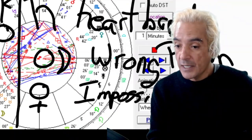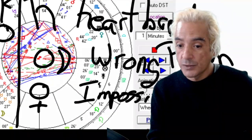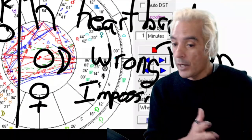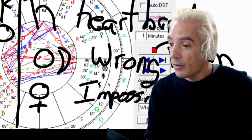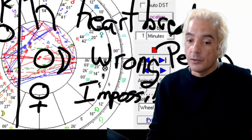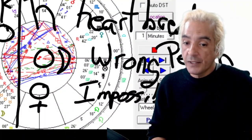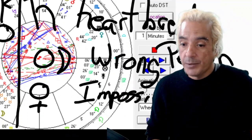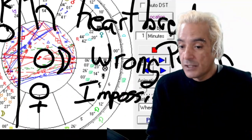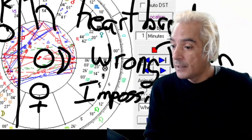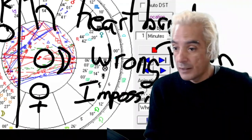Marriage can happen though, especially if the other person was born with a square or opposition to Chiron in their own chart. However, research has revealed that 85% of couples with this clash end up in divorce.